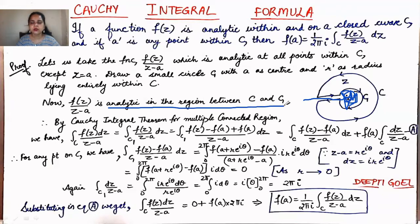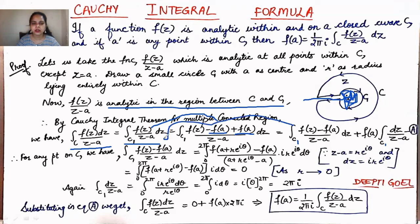By converting the multi-connected region into a simply connected region, we can now apply the Cauchy Integral Theorem. Applying the extension of the Cauchy Integral Theorem to the multi-connected region, we say that the integral over C of f(z)/(z − a) dz equals the integral over C1 of f(z)/(z − a) dz. For the C1 integral, we add and subtract f(a), writing it as [f(z) − f(a)]/(z − a) dz plus f(a) · ∮_C1 dz/(z − a).